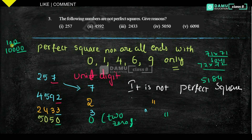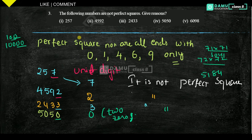Our next one is 6098. Unit digit is 8. So for that, it is not a perfect square.